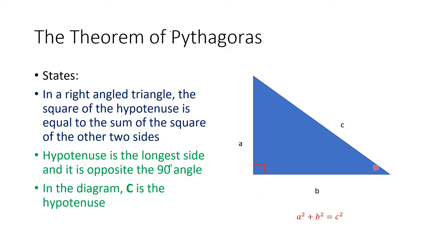Looking at my diagram, this is my right angle triangle. I have one angle equal to 90 degrees. To figure out my hypotenuse, I'm going to look at the side directly opposite the 90 degree angle. So my hypotenuse is side C. It is also the longest side in a triangle.